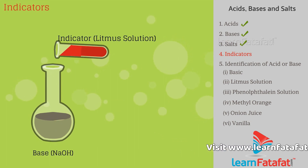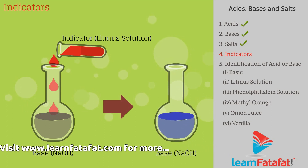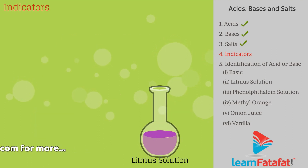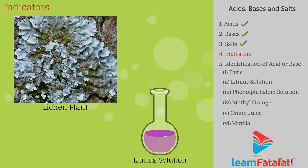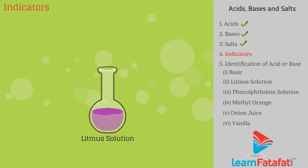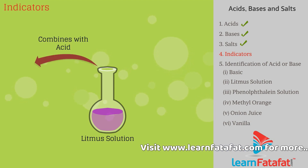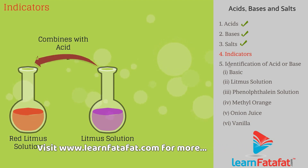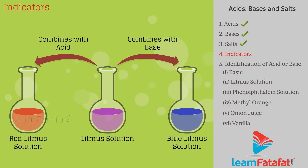Indicators are the chemicals that are used to find the nature of a solution — that is, whether it is acidic or basic. Litmus solution is a purple dye extracted from the lichen plant. Neutral litmus solution is purple in color, but when exposed to an acid or base, it changes color. In acidic solution, it changes color from purple to red, while in basic solution, it turns red litmus to blue.